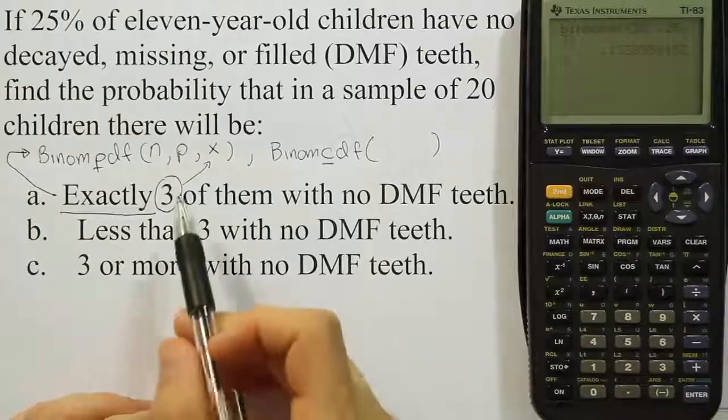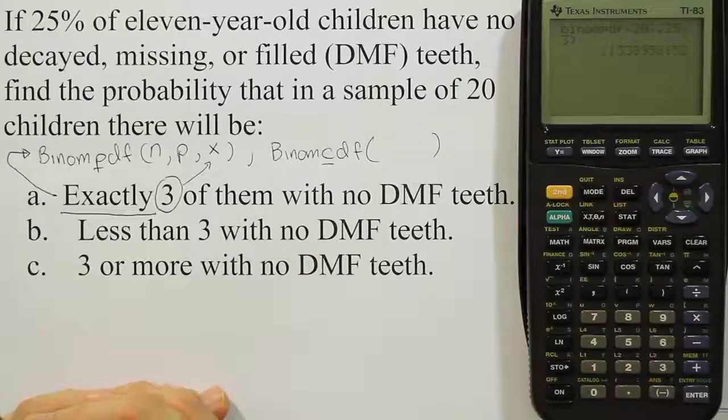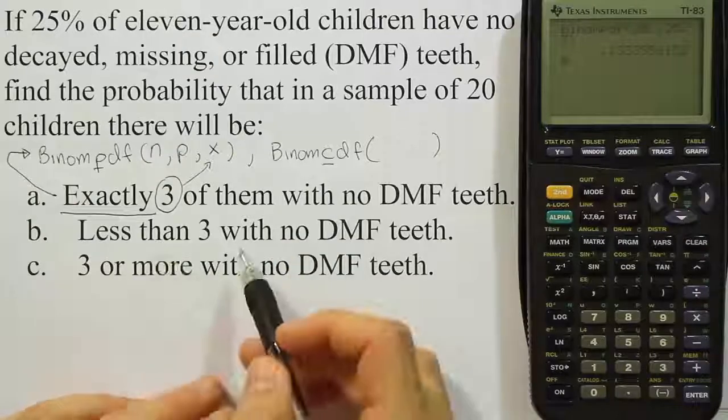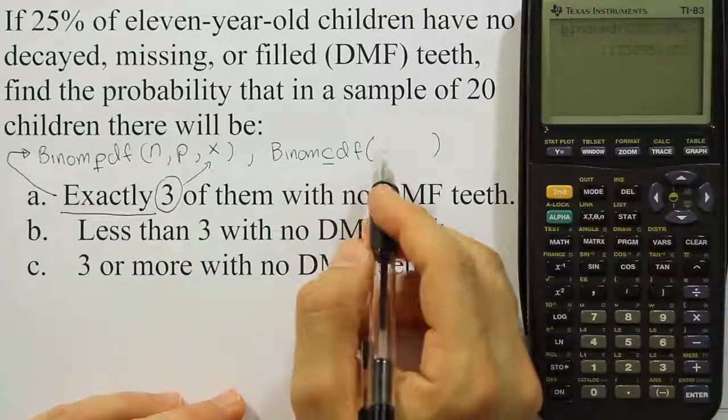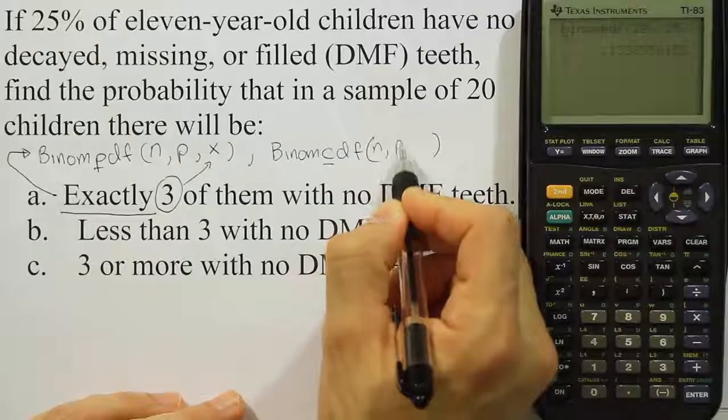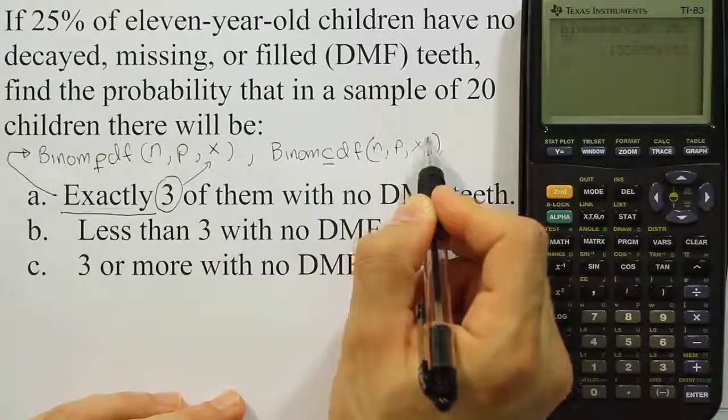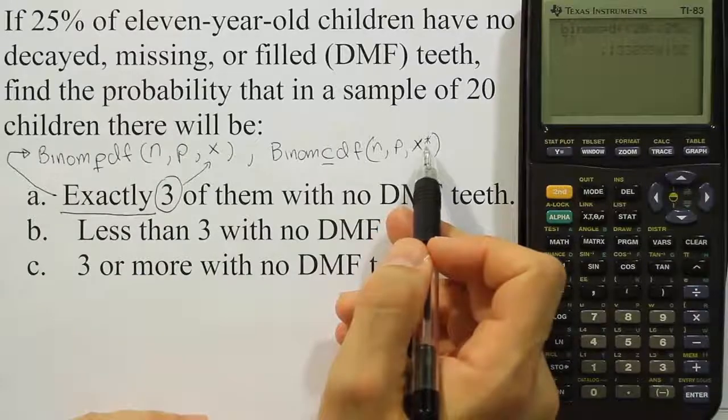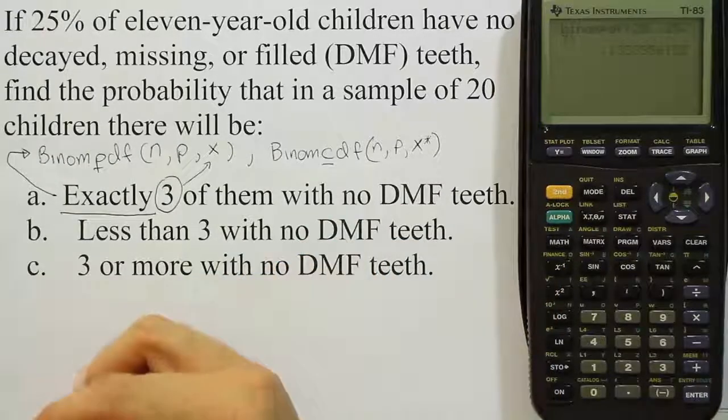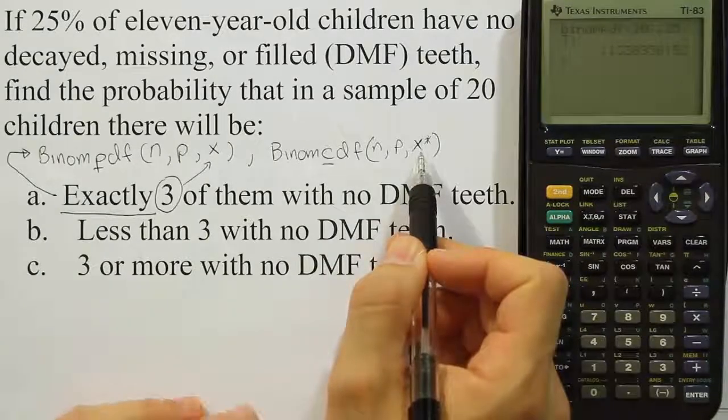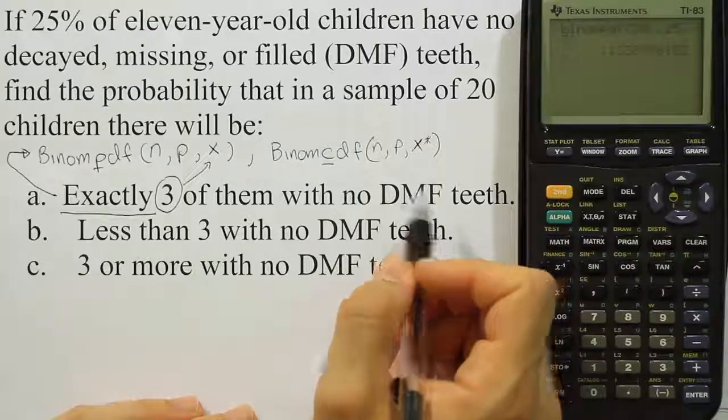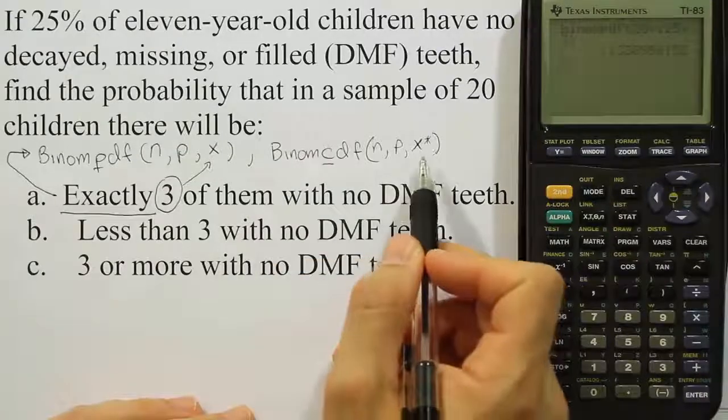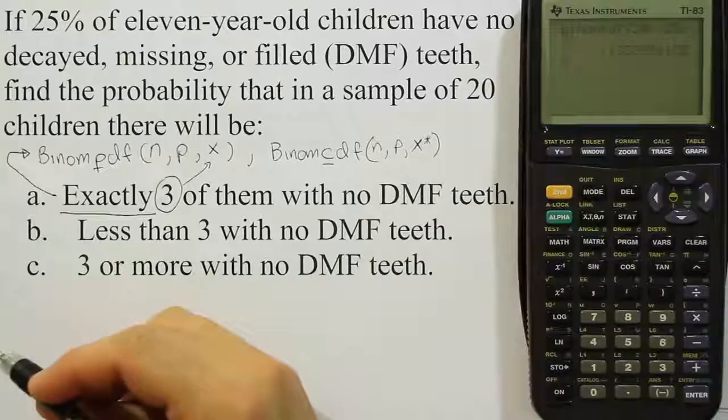So that's my first answer. There's about a 13.4% chance that this occurs. When I grab a sample of 20 children, exactly three of them will have no DMF teeth. Now let's look at the next scenario. The next scenario uses the same approach, it's binomcdf, and we still do n, and we still do p, and we still do x. But there's a little important note about this x value. We have to remember that this x value is the number we give the calculator. It's not necessarily the number that we see in the problem itself. This x value has got to be a value where the calculator will start with that value, get its probability, and then get the probability of the number right below that, all the way down to 0.